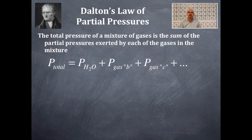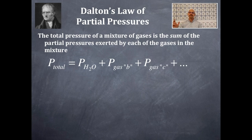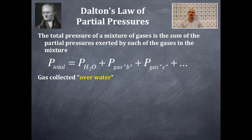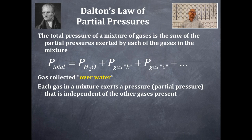The total pressure of a mixture of gases is the sum of the partial pressures exerted by each of the gases in the mixture. This is the equation: P-total equals the partial pressure of gas A, plus the partial pressure of gas B, plus gas C, plus gas D, etc. If there's only two gases, you add two of them up; if there's three, you add three; if there's ten, you add them all. When you see the words 'collected over water,' those are key words that tell you you're going to be using Dalton's Law. Each gas in a mixture exerts a pressure — a partial pressure — that is independent of the other gases.